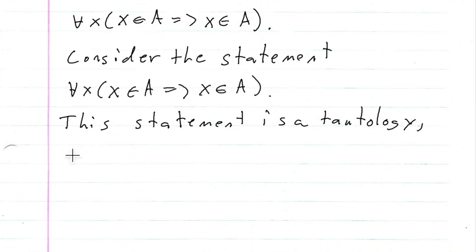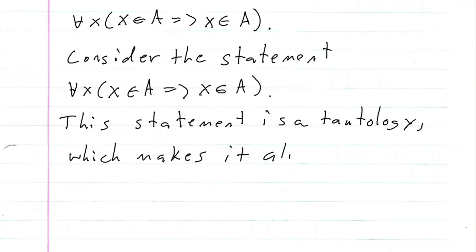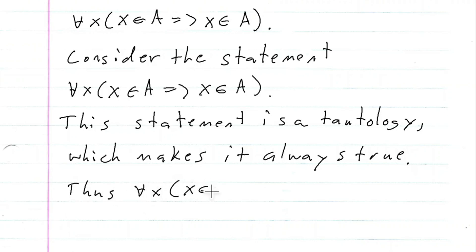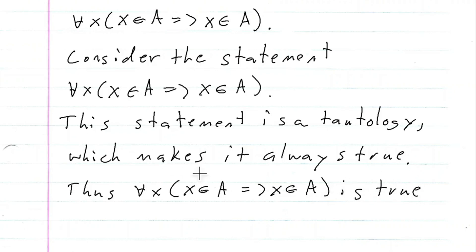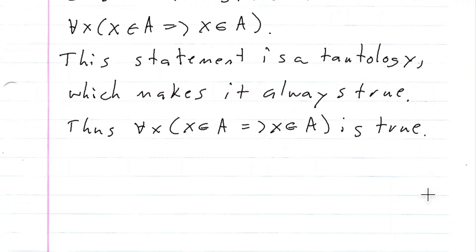A tautology means it is always true. So if we have X as an element of A implies X is an element of A, this statement is true because it's a tautology. And of course, if this statement is true, this implies that A is a subset of A, and that is the proof.